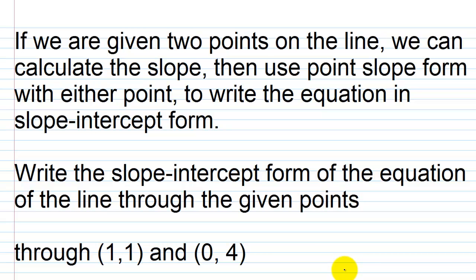Let's continue talking about point-slope form and some of the things you can do with it. If we're given two points on the line, we can calculate the slope using the slope formula y₂ minus y₁ over x₂ minus x₁, and then use point-slope form with either point — it doesn't matter which one — to write the equation in slope-intercept form.